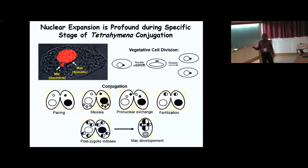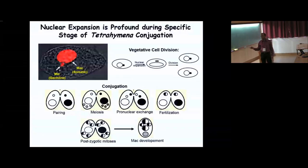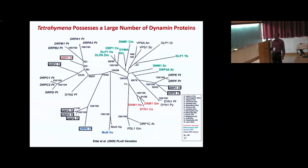We discovered the first cytoplasmic factor governing this nuclear expansion stage, and found it is a dynamin protein required for transition from the germline to macronucleus stage. Tetrahymena, although a single-cell ciliate, has a very complex membrane structure as complex as human cells. It has eight dynamin-related proteins — very large for a single-cell organism.